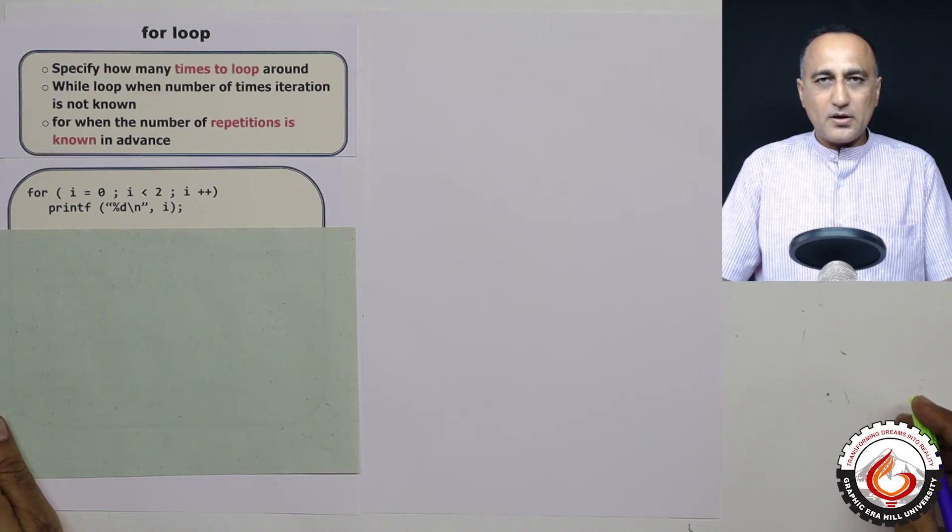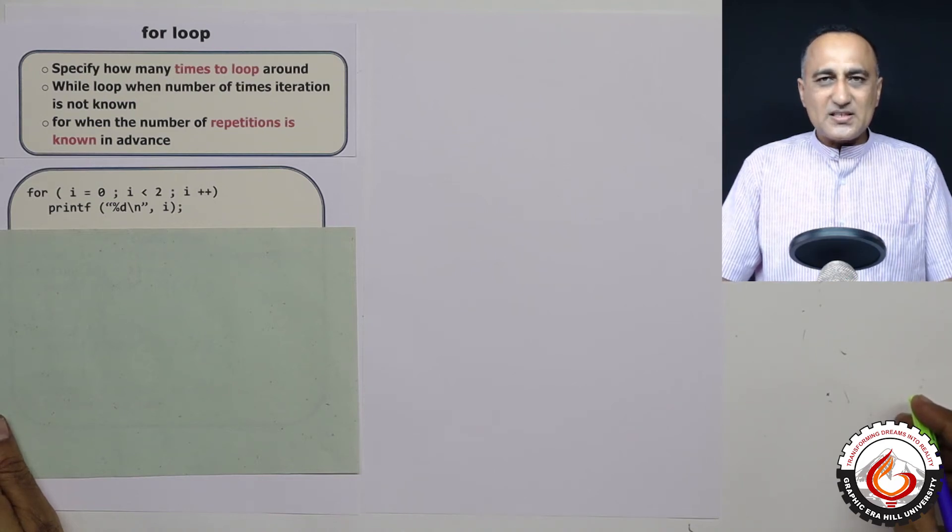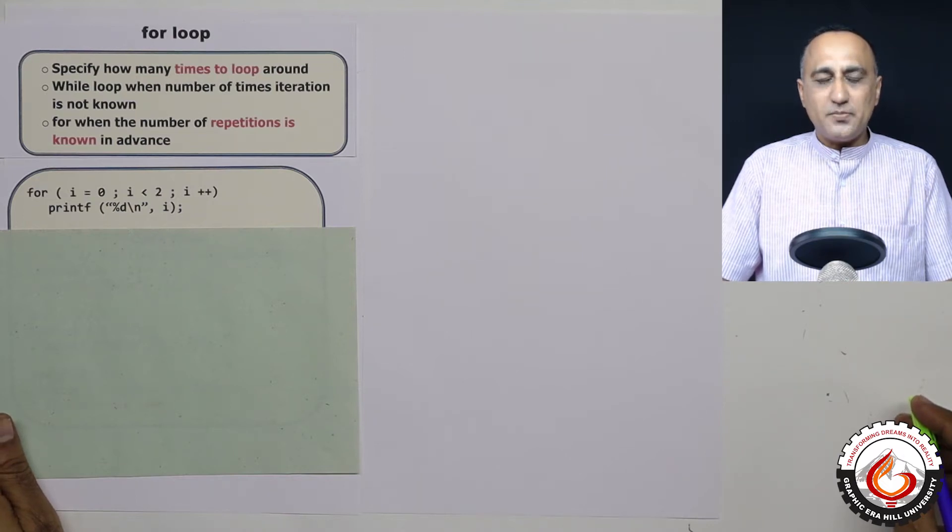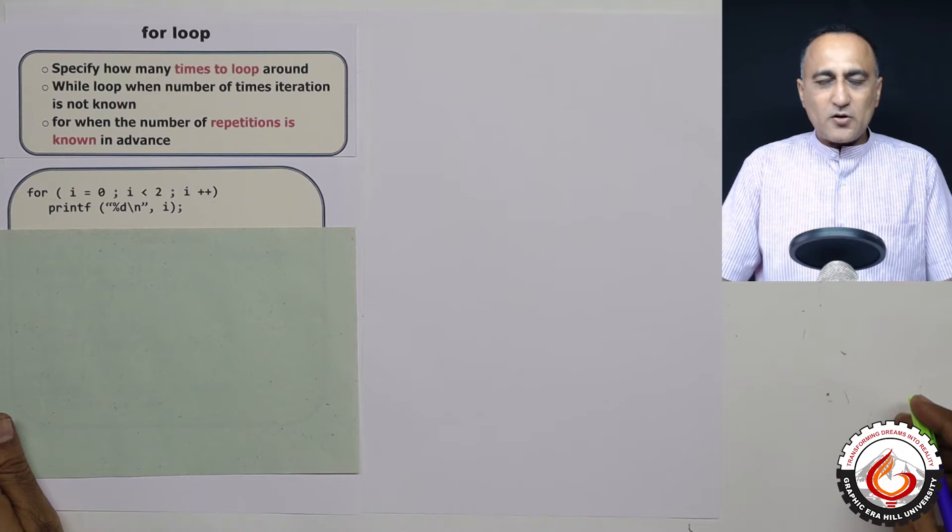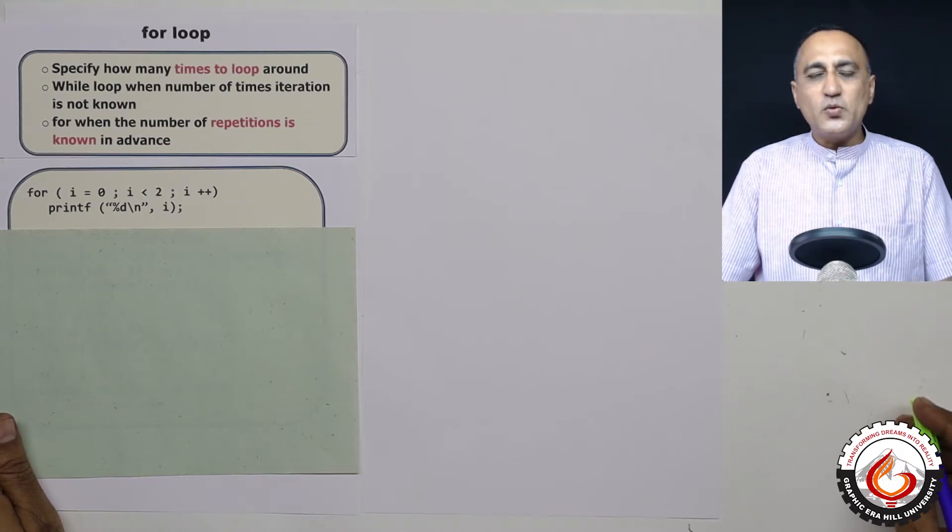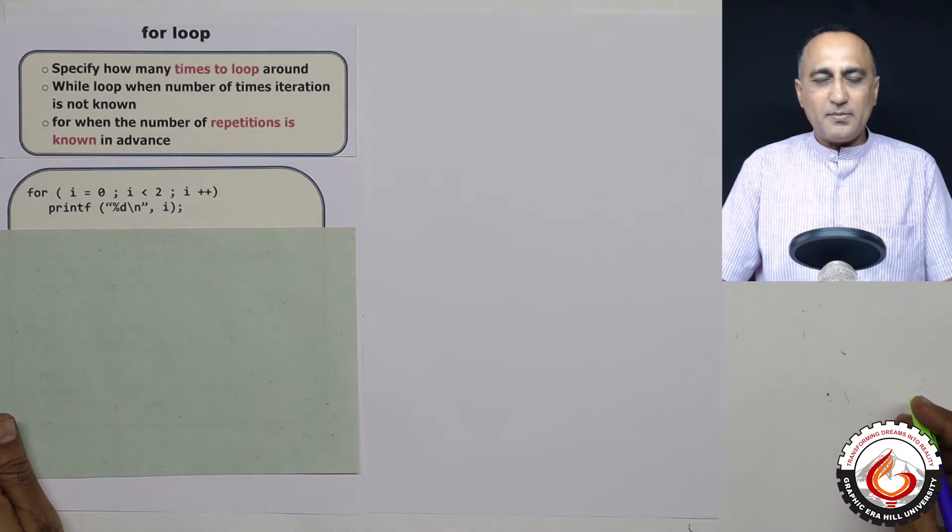The for loop. This is possibly the most frequently used loop in C programming. Now generally, whatever you can do with one loop statement, you can always do with the other loop statement.